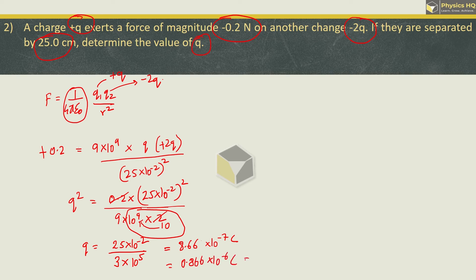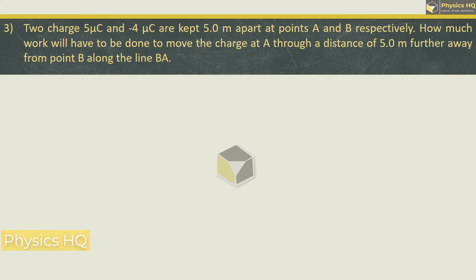You can also write this as 0.866×10⁻⁶ coulomb, or 0.866 microcoulomb. Hope you all understood this.